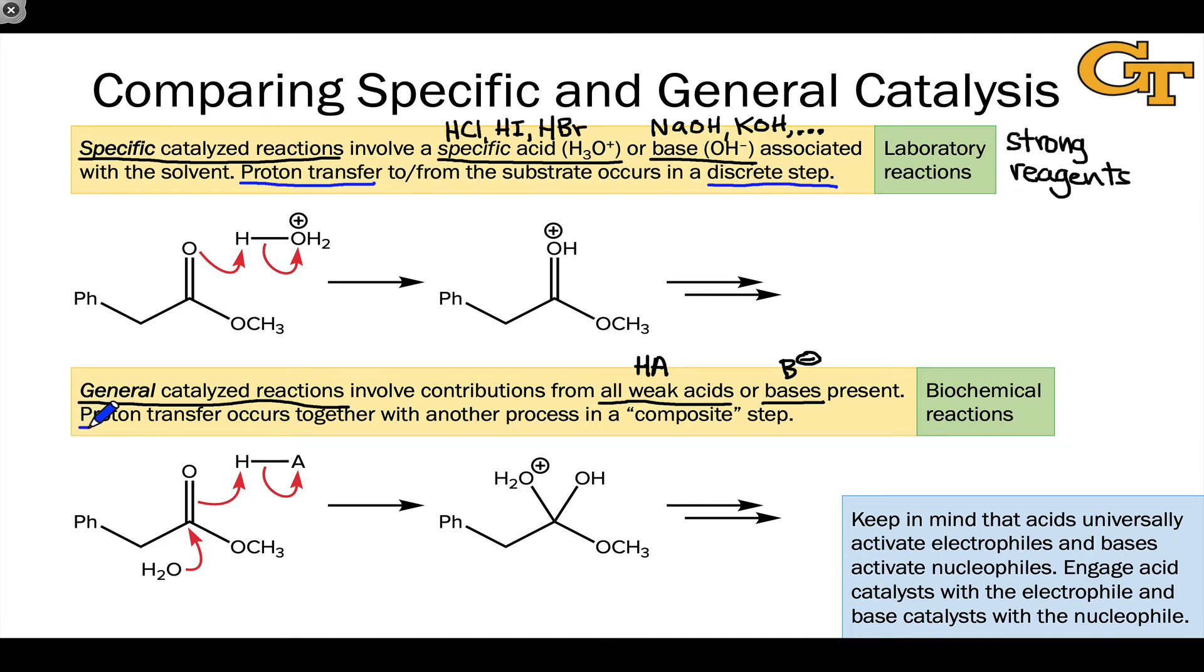And mechanistically, the hallmark is proton transfer occurring together or at the same time as the business elementary step in what we might call a composite elementary step, PT plus something in the case of a base catalyst or something plus PT in the case of an acid catalyst. General catalysis is typical when weak reagents are used. So these might be things like acetic acid, carboxylic acids, amine bases, neutral bases are often used in general catalyzed mechanisms.